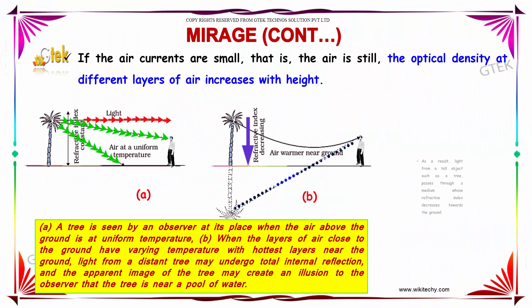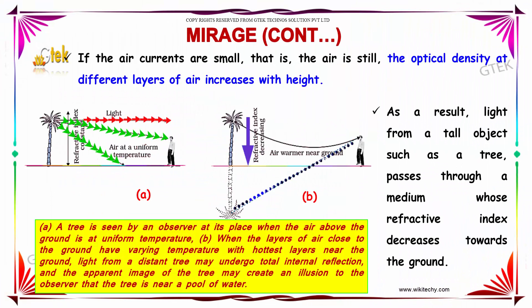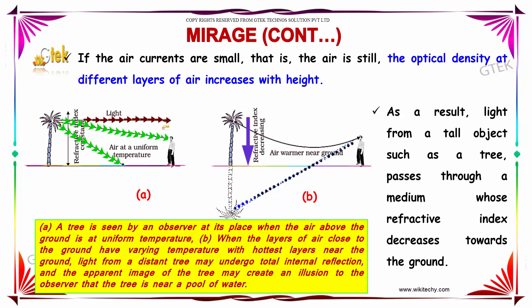If the air currents are small — that is, the air is still — the optical density at different layers of air increases with height. You are able to see that the refractive index is constant when air is at a uniform temperature.